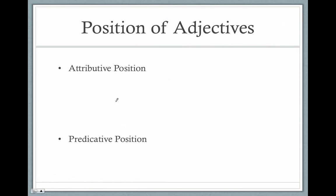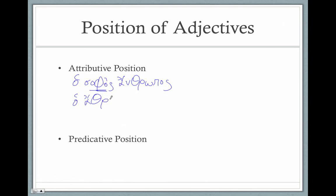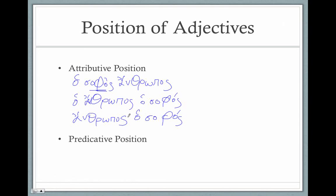Where do we put adjectives? There are two positions. The first is the attributive position — the most standard form places the adjective between the article and the noun: ho sophos anthrōpos, 'the wise man.' The attributive position can also be formed by repeating the article: ho anthrōpos ho sophos — again after the article, still attributive, still 'the wise man.' A third way is to omit the first article: anthrōpos ho sophos, 'the wise man.' All three of these are the attributive position and are translated the same way.